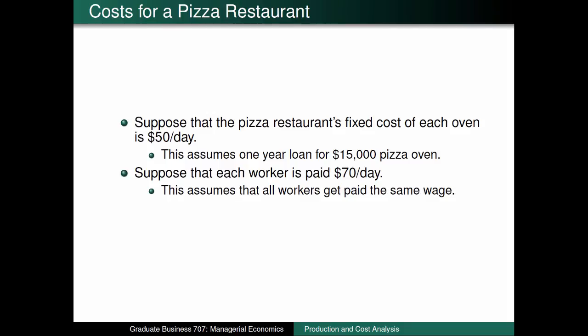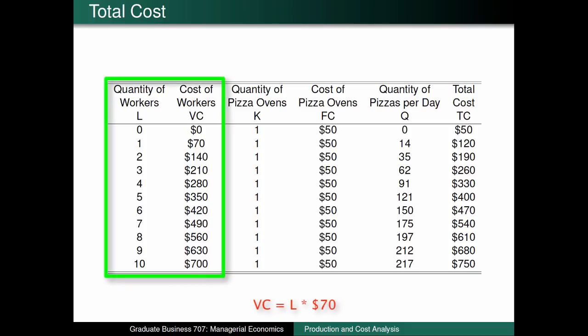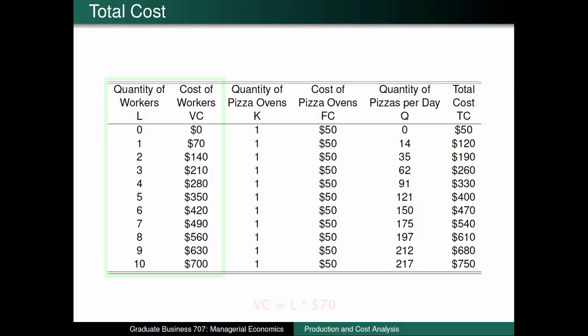it will allow us to calculate our cost concepts much more easily. This chart connects the production function chart we analyzed in the previous recording with the cost concepts that I just introduced. First, notice that we calculate the variable cost — which again is the cost of workers — by multiplying the number of workers by the wage, which I gave as $70 per worker.